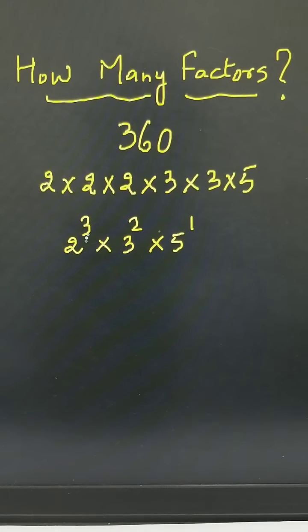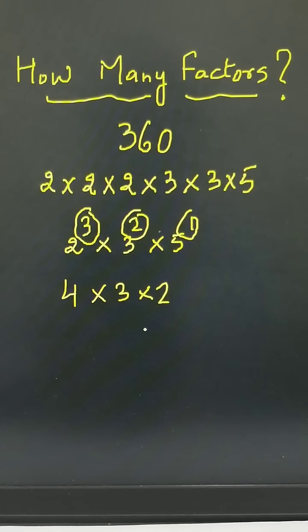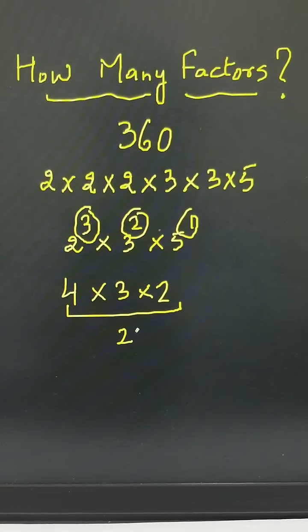Just increase all exponents by 1. 3 becomes 4, 2 becomes 3 and 1 becomes 2. Multiply them, the factors, total number of factors of 360 are 24.